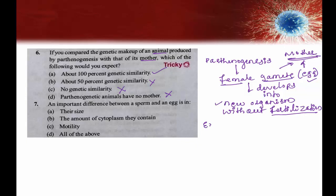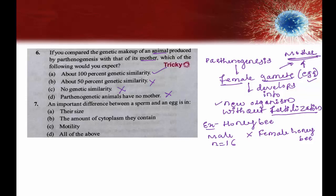Taking the example of honeybees: sex determination in honeybees was studied in genetics. In honeybees, males are always haploid with 16 chromosomes, and females are diploid with 32 chromosomes. When male honeybees produce sperms, they divide through mitosis because the chromosome number is already haploid.